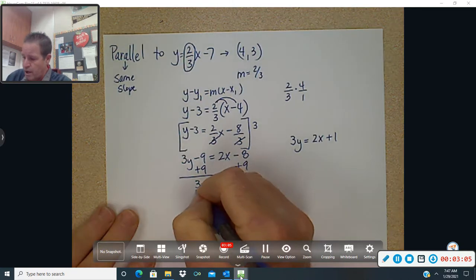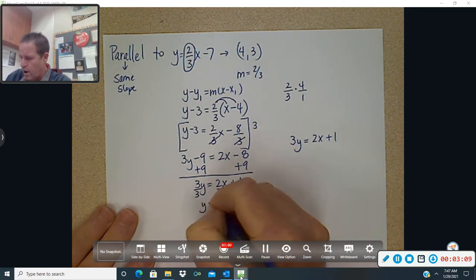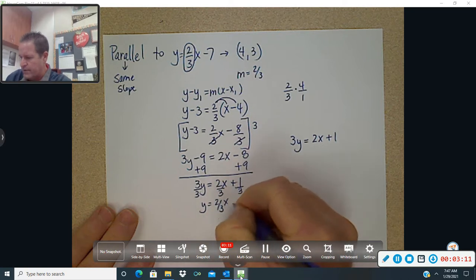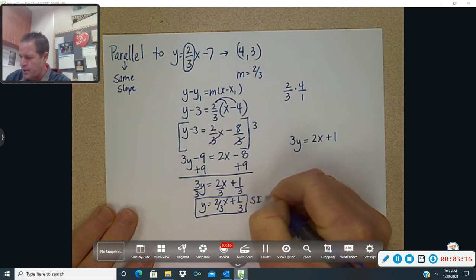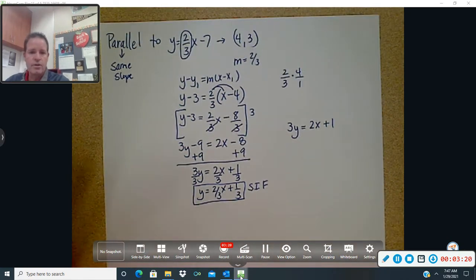Okay, but I can continue and solve for y here. Divide everything by 3. And you're going to have y equals 2 thirds x plus 1 third, and that is your slope intercept form. Your worksheet today is going to ask you to do slope intercept form and standard form.